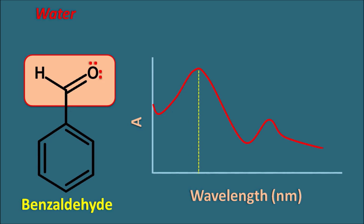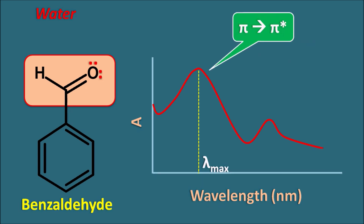At the first peak we can observe maximum absorption, and the corresponding wavelength is called lambda max. This peak corresponds to the pi to pi* transition of benzaldehyde. The second peak corresponds to the n to pi* transition. The pi to pi* transition shows a higher peak because it has a greater probability than the n to pi* transition. This is the spectra of benzaldehyde in the presence of water as the solvent.